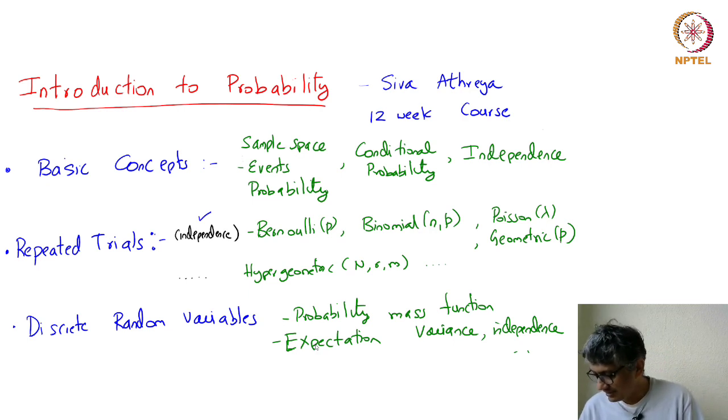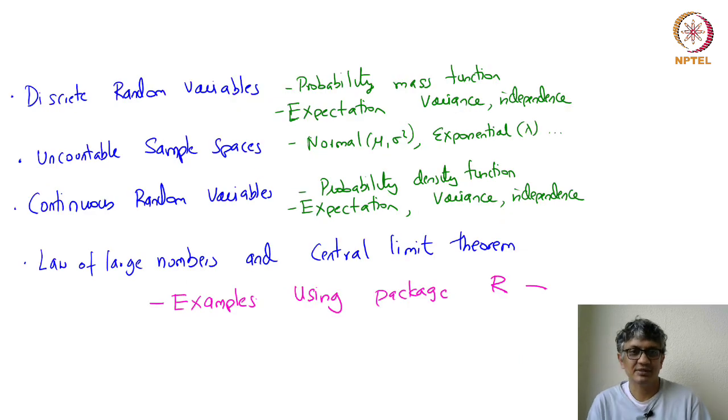Once this is done, then we move on to the idea of uncountable spaces. The term uncountable may be unfamiliar to many of you, but the idea is that these are natural notions of normal and exponential distribution which you have seen. These take values on continuum spaces like normal random variable puts weights on the real line, exponential puts weights on the positive real line, and so on.